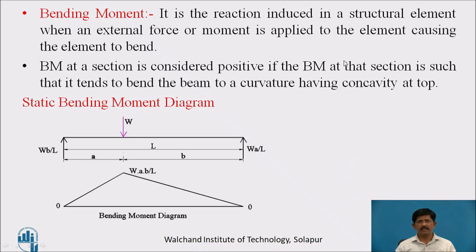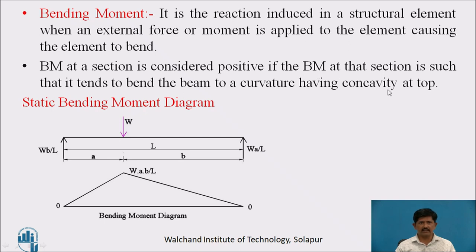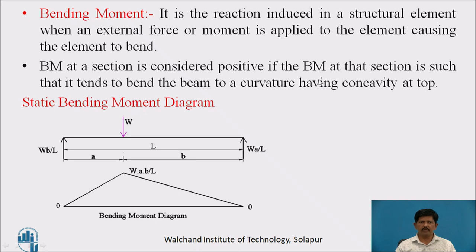Bending moment is the reaction induced in a structural element when an external force or moment is applied, causing the element to bend. It may be hogging or sagging. The bending moment at a section is considered positive when it tends to bend the beam to a curvature having concavity at the top, meaning top fibers are in compression and bottom fibers are in tension. Before dealing with the ILD for moving load, we will see the bending moment diagram for static loading.